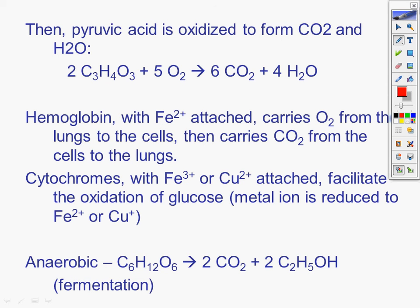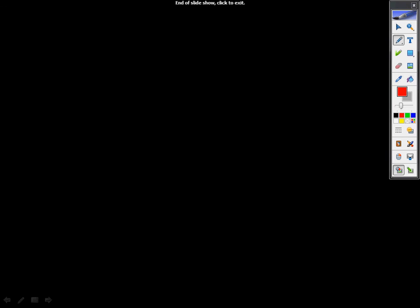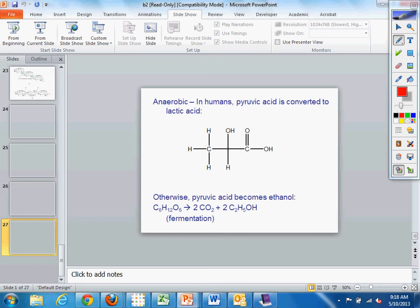Anaerobic glucose just produces carbon dioxide and what is that, C2H5OH? What is that? Ethanol? Yeah. Ethanol. Anaerobic, you're going to produce alcohol. Anaerobic in humans, pyruvic acid is converted to lactic acid. Otherwise, pyruvic acid becomes ethanol. You're not going to get drunk by doing a lot of exercise. So that's not going to happen. It's going to be lactic acid. Some people have asked me that question before. Very good.